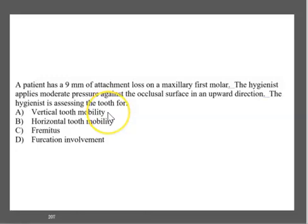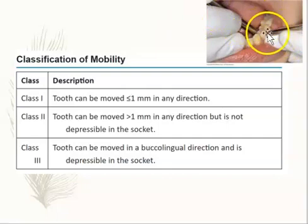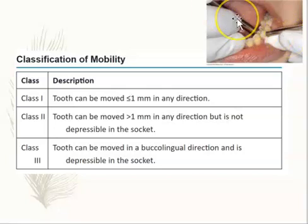Option A is asking for vertical tooth mobility, so let's review what that is. To test for mobility, we always use two ends of an instrument — always the ends of an instrument, never the finger. We will not get accurate readings if we use the finger; always use the ends of an instrument.